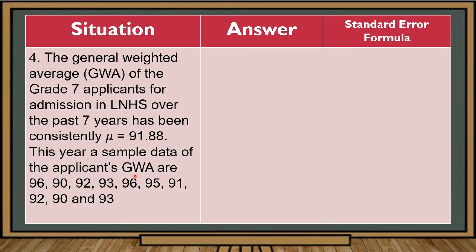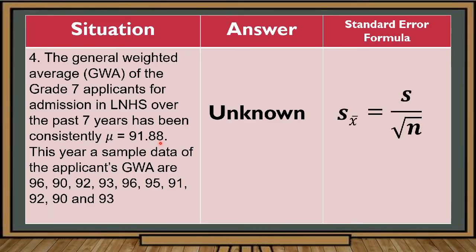We also have a sample size of 10, since there are 10 sample data items, and we can solve for the sample mean. However, in order to solve for the population variance, we need the population mean and the population size N. Since the population size is not given, it is impossible for us to determine the population variance. So in this situation, the variance is unknown. If it is unknown, the standard error formula is given by this formula — remember that if the variance is unknown, we use the sample standard deviation.